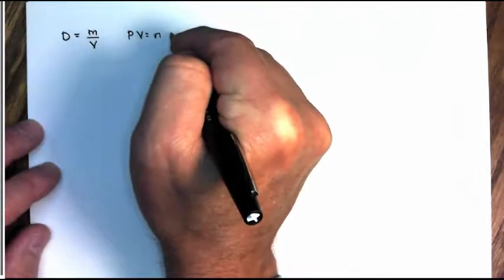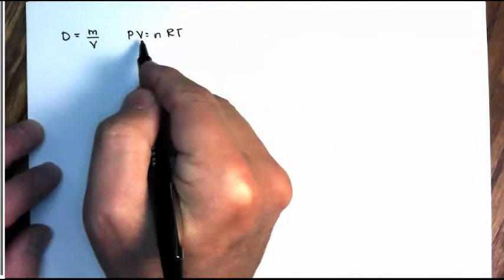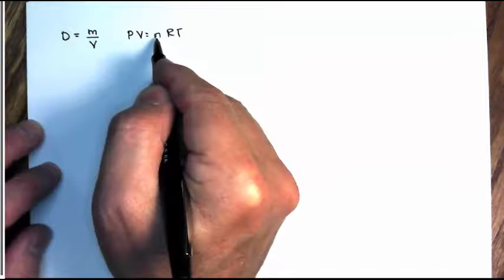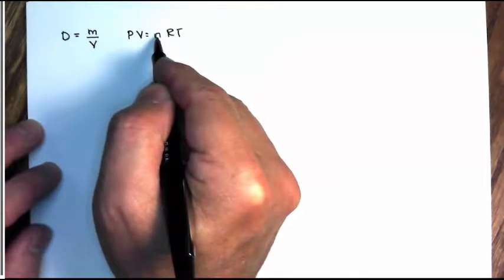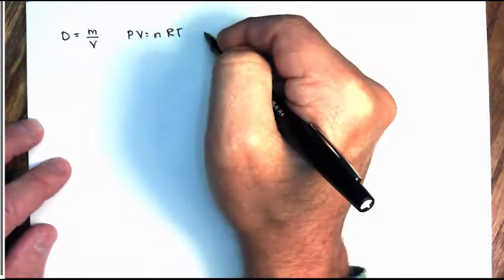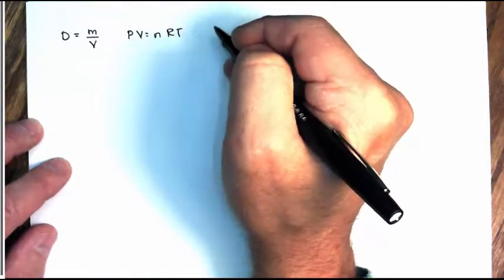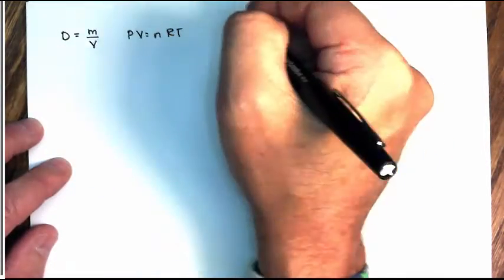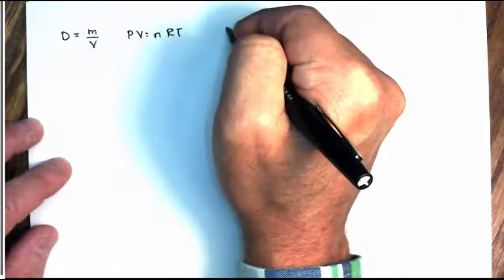Here's our PV equals nRT, and we have volume in this, but we don't have mass. However, you should know molar mass of any substance is equal to mass per unit mole.